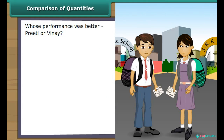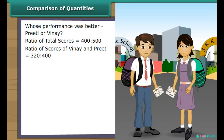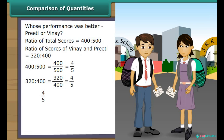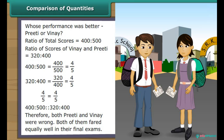Earlier in this lesson we heard Preeti and Vinay argue that their respective performances in the final exam were better. Let us sort their argument out with the help of proportion. Expressing the scores as ratios: 400 is to 500, and 320 is to 400. Reducing to lowest terms, both equal 4/5. The two ratios are in proportion, so both Preeti and Vinay fared equally well in their final exams.